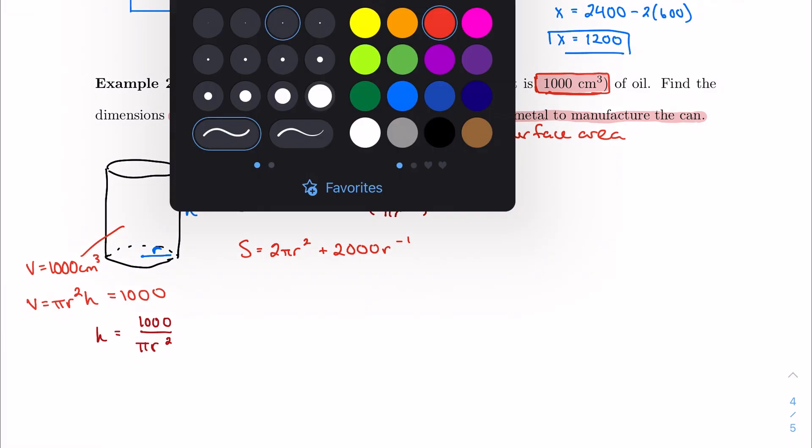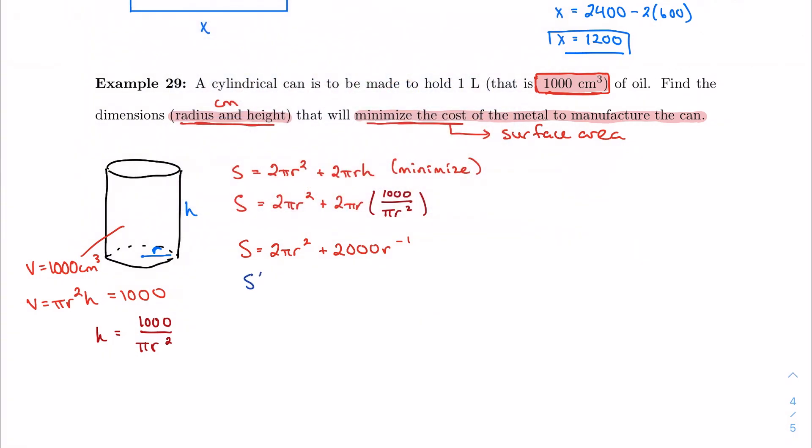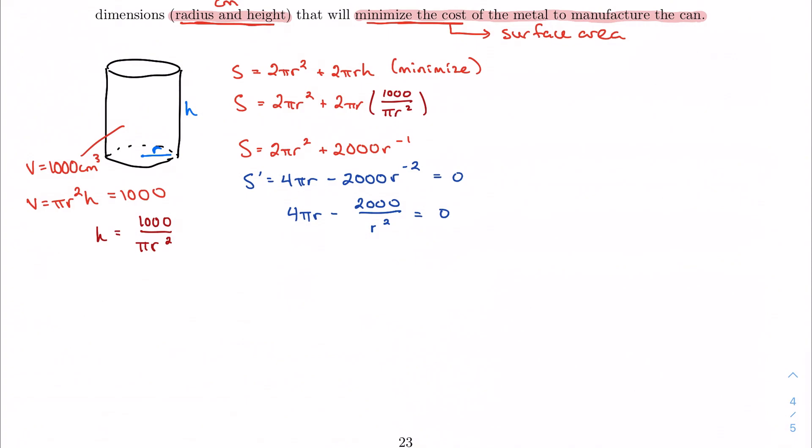Well, here's my one equation. Business as usual. Derive and set equal to 0. 4 pi r minus 2000 r to the negative 2 equal to 0. Let's turn this back into a fraction because we're dealing with algebra. So fractions are generally easier. And we'll solve. We'll move this over to one side. Let's get that r squared up here. I'm going to get r cubed equal to about 159.1549. Which, when I take the cube root of that, gives me a radius of approximately 5.42 centimeters.